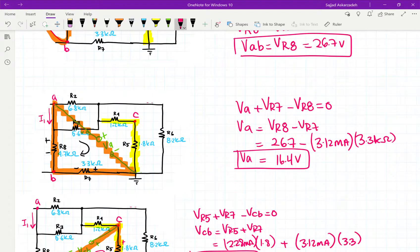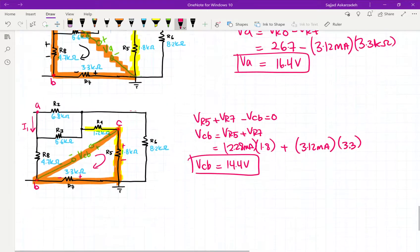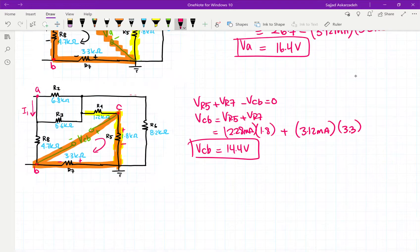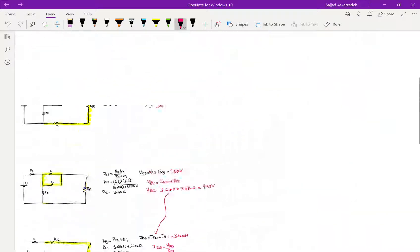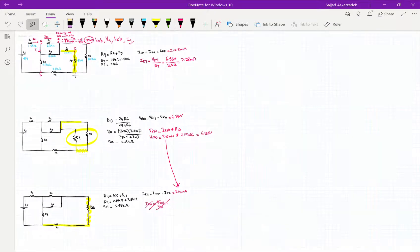For VA, it's voltage of A with respect to the ground, whatever the ground of this circuit is. And for VCB, it's voltage of C with respect to B. And this is how you find all those values. And this is an example of reduce and return. Thanks for watching.